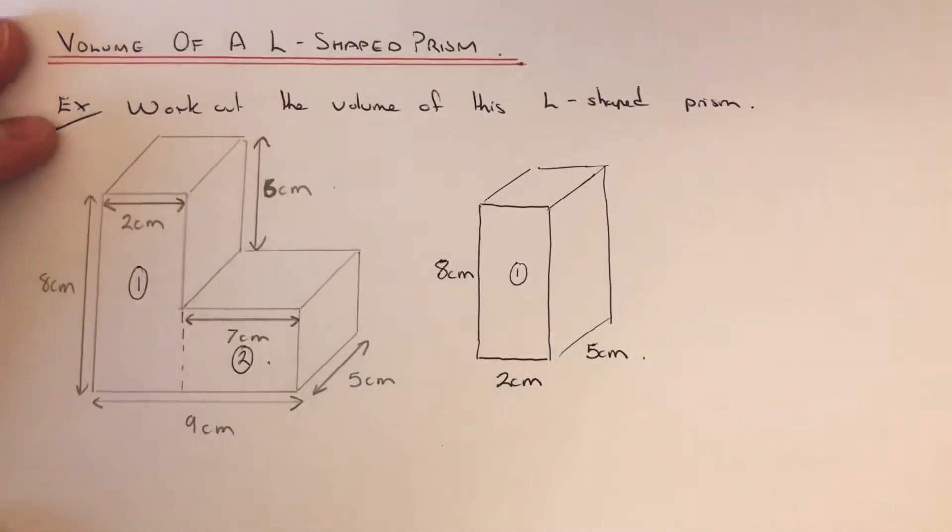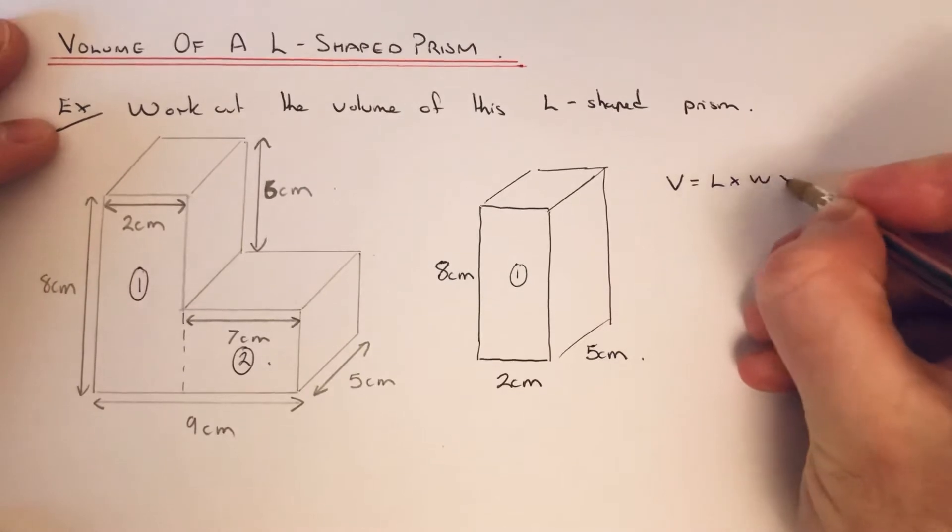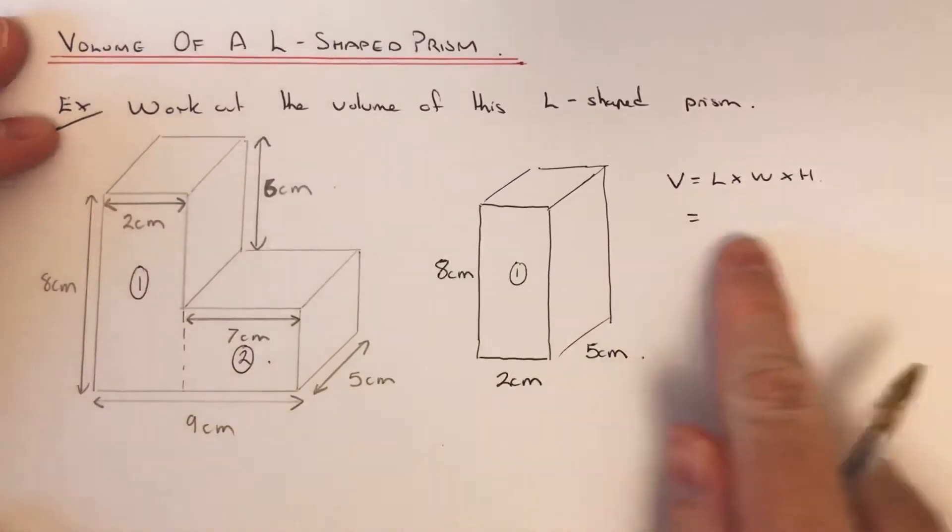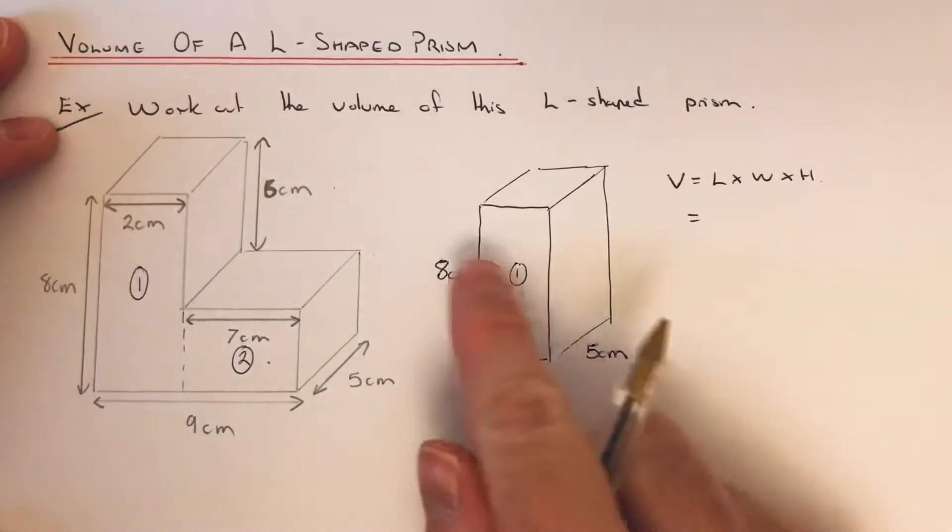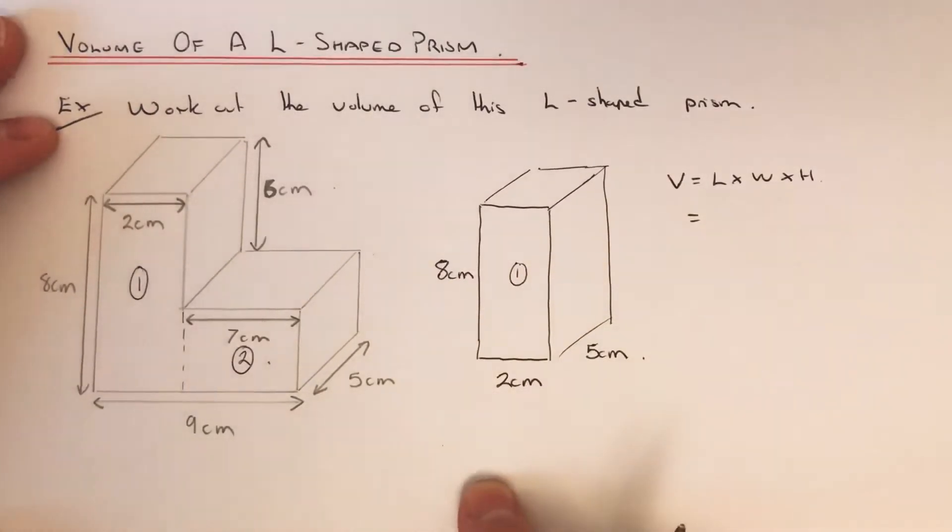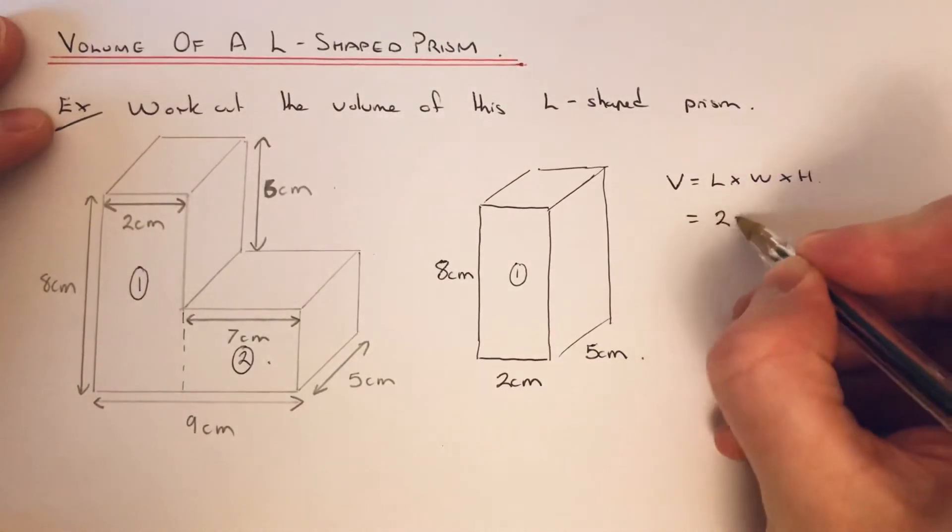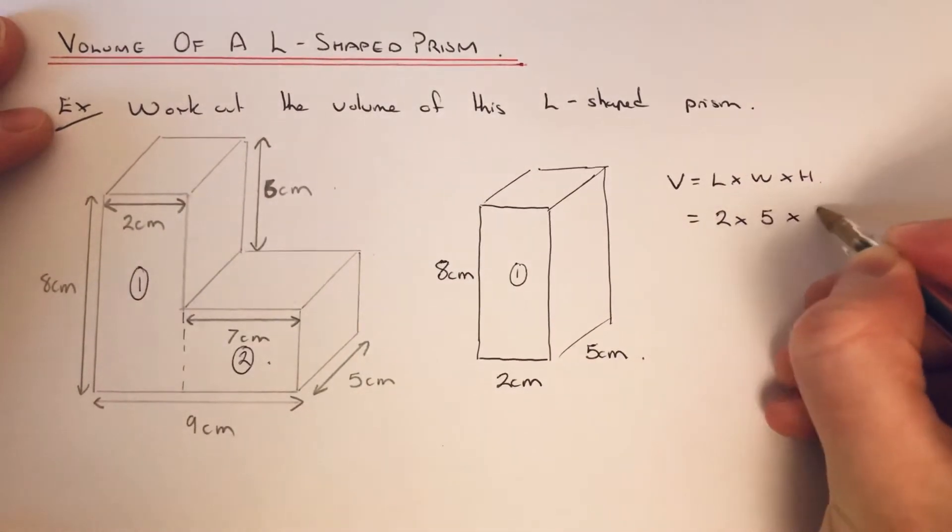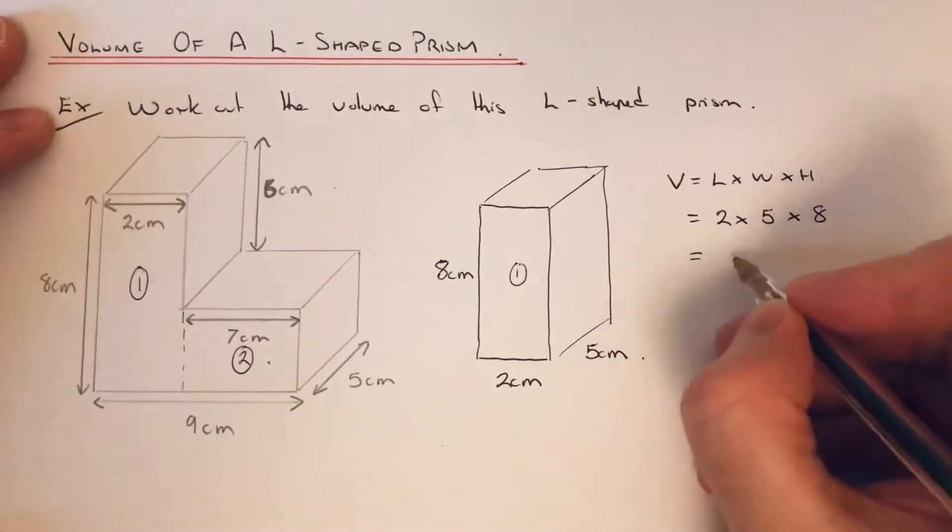To work out the volume of a cuboid you do the length times the width times the height. It doesn't matter which order you do these in, you'll get the same answer as long as you multiply the three sides of the box. Let's just do 2 times 5 times 8. So 2 times 5 is 10, 10 times 8 is 80.